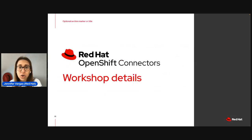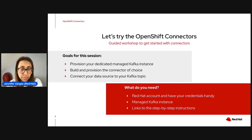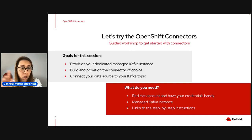The workshop for today has three steps: first, provision a managed Kafka instance; second, build and provision the connector of your choice; and finally, connect your data source to your Kafka topic. To make this happen, you need a Red Hat account — have your credentials handy. You can go to console.redhat.com and sign up, which gives you access to all our trials and services. You also need a managed Kafka instance provisioned for you.